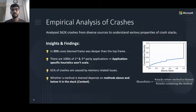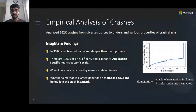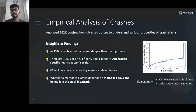We compute a custom metric called blame ratio — the ratio of stacks where a method is blamed to the ratio of stacks containing that method. We find that a significant fraction of methods have a blame ratio less than one, indicating that a method blamed in one stack need not always be blamed in another. Whether to blame a method completely depends on context — the other methods in the stack above and below it. I refer you to the paper for further insights from the empirical study.